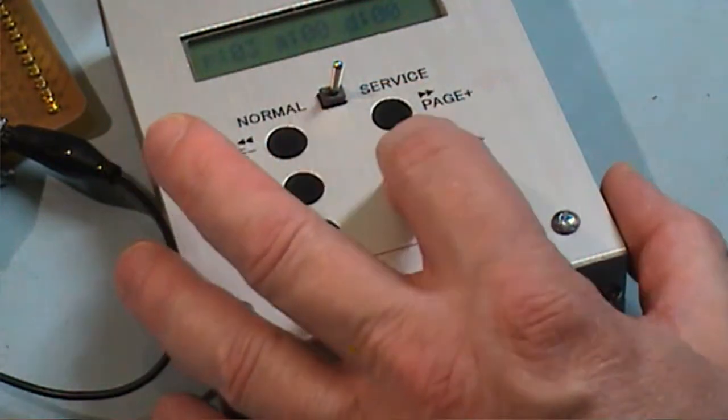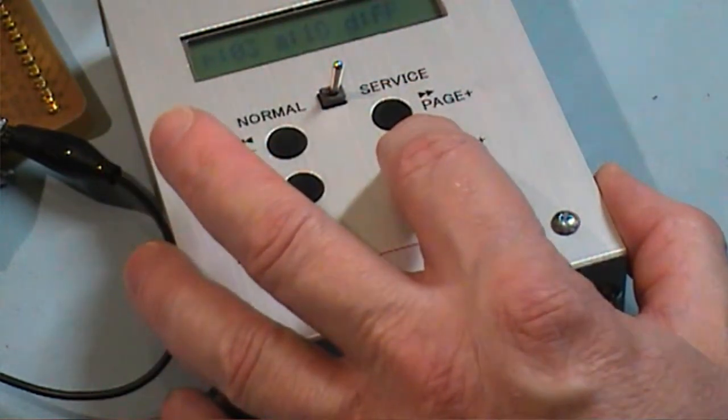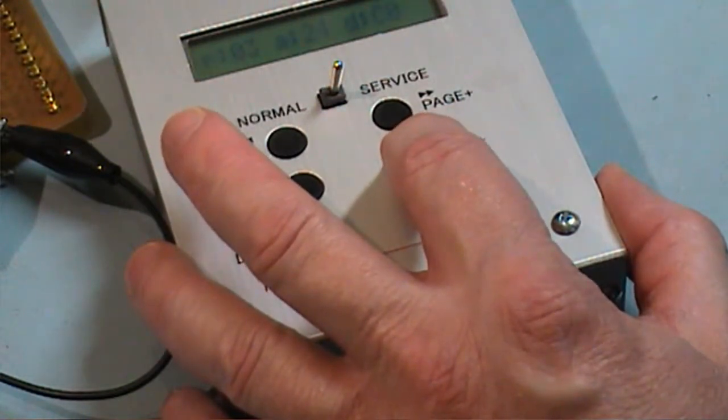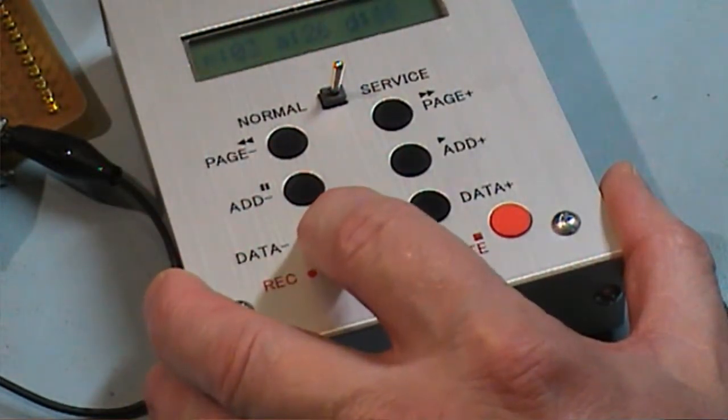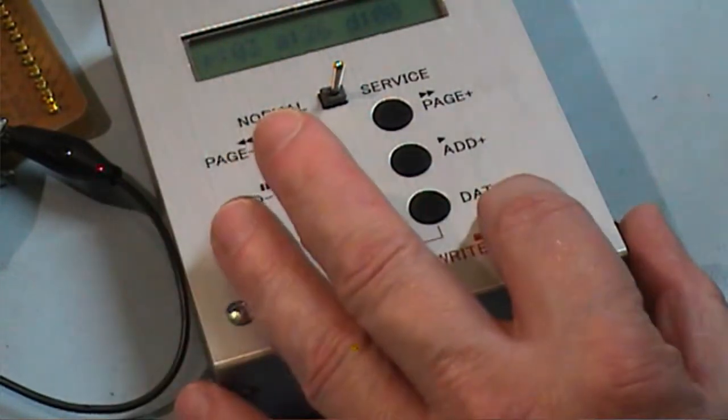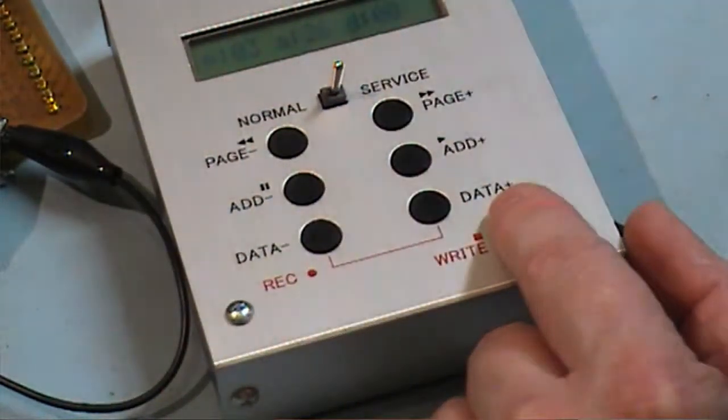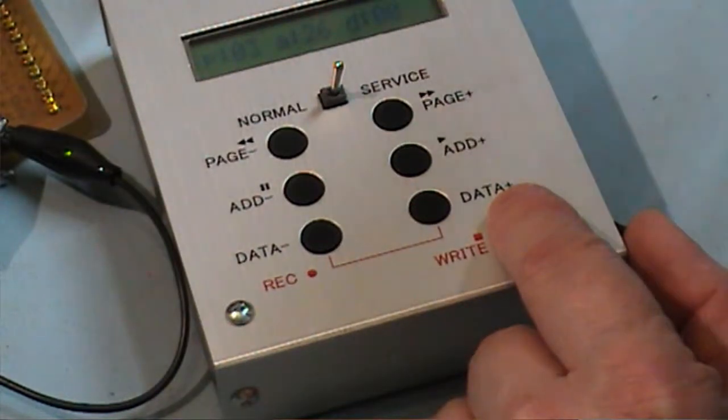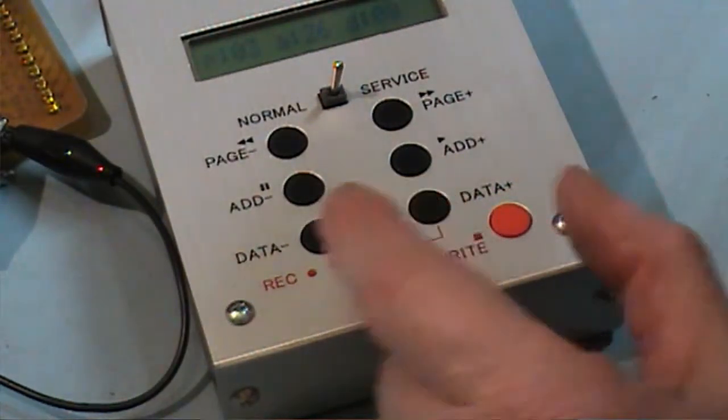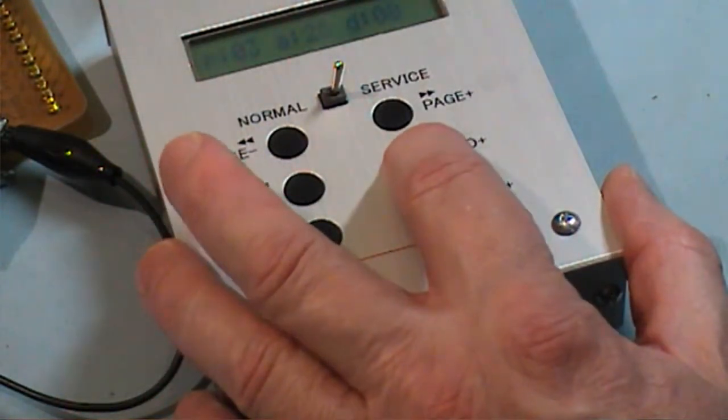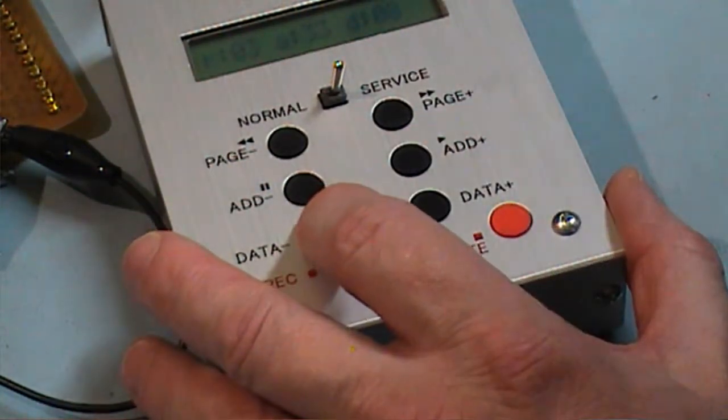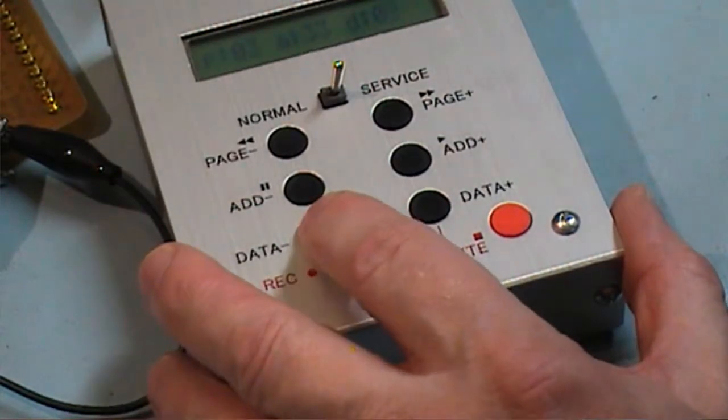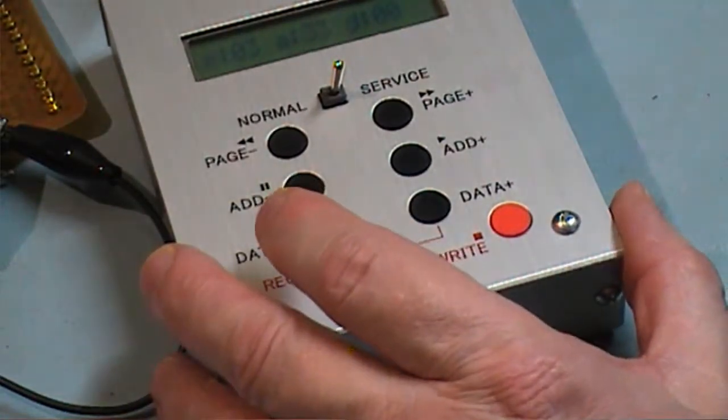Now we go to page 3, address 26, and set the data to 00. You have to press the write key now to store that information. Now we go to address 33, and I am going to change that data to 00. I don't have to press the write key for this. And immediately I do that, my RF waveform disappears off the oscilloscope.